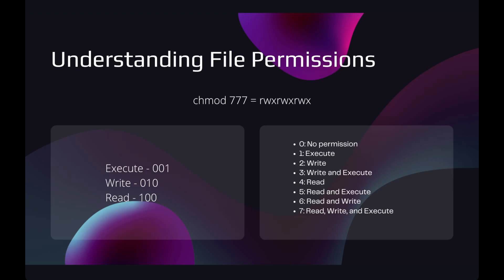To understand file permissions in depth, you must have come across the command 'chmod 777'. chmod is used for modifying the permission of a file, and you may also know 'chown', which is used to change the owner of a file. So why 777? chmod 777 basically means assigning full permission to a file, meaning anyone can read, write, and execute the file. It roughly translates to rwx rwx rwx — the owner, the group, and any other user in the system all get read, write, and execute permissions.